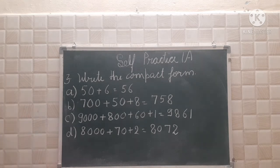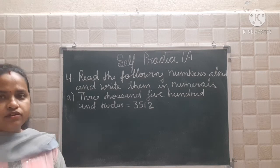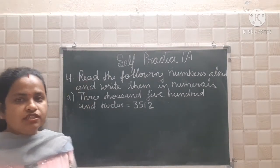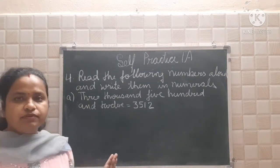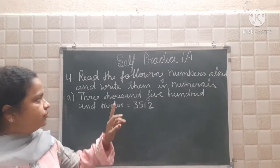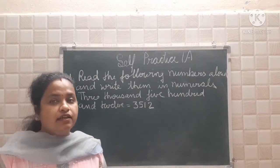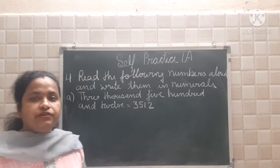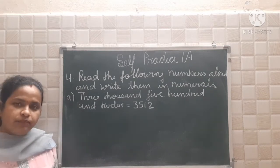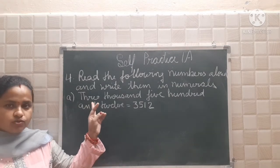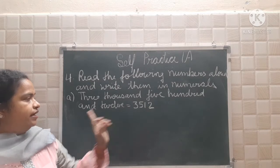Now do this question. Let's see question number 4. In question number 4, what you have to do? You have to read the following numbers aloud — means you have to read these numbers loudly and then write them in numerals. So see here what is written: 3,512.